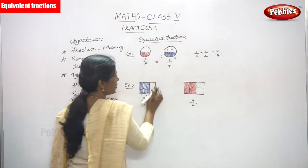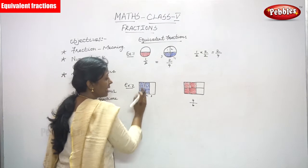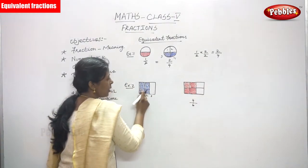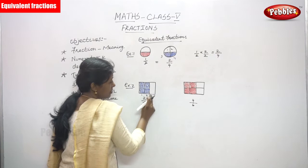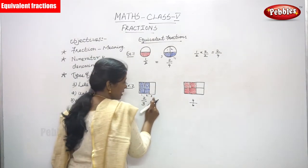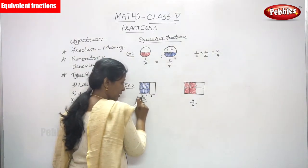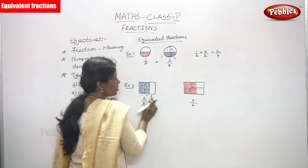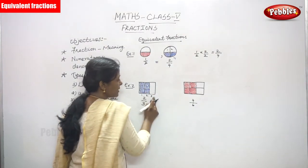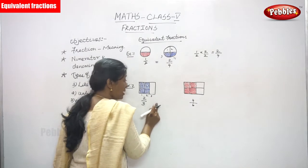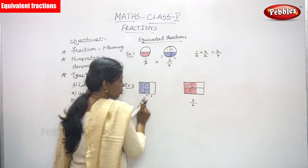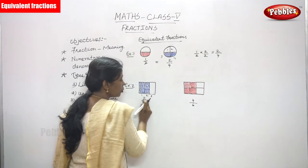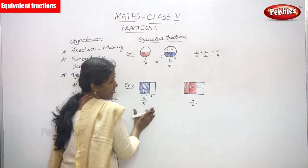So to repeat: first I draw the rectangle, then I cut it into 3 equal parts — 1, 2, 3. I shaded only 2 portions, so the overall part is 3 and the shaded portion is 2. So 2 by 3 is the fraction of this diagram.